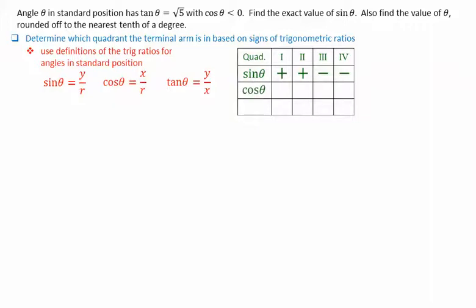For cosine theta, it will be positive in quadrant 1, negative in quadrant 2 where x is negative, also negative in quadrant 3, and positive in quadrant 4, since x is positive in quadrant 4.